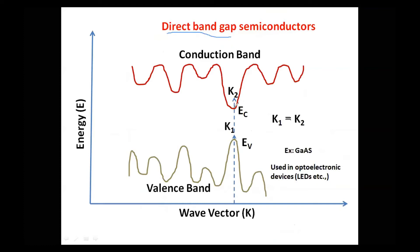What do we mean by direct? The topmost point of the valence band and the bottommost point of the conduction band are at the same value of K — they have the same K value on the wave vector axis. K1 is equal to K2, meaning the bottom of the conduction band coincides with the top of the valence band. The semiconductor for which this condition holds is known as a direct bandgap semiconductor, where the K position for both band extrema are the same.